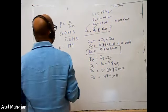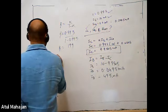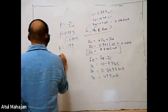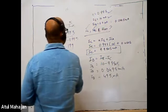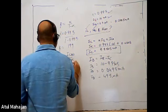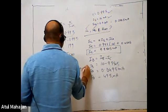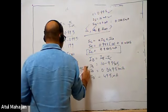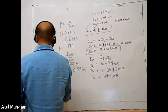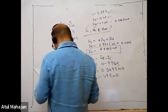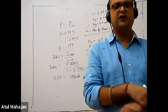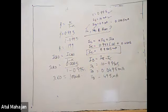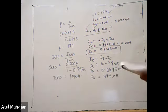Finally, ICEO = ICBO / (1 − α) = 0.0005 / (1 − 0.995) = 0.0005 / 0.005 = 0.1 mA = 100 μA. This completes the numerical problem. These are the basic numericals for common base and common emitter configurations. Any doubts from students can be addressed now.